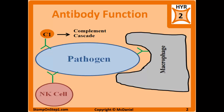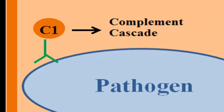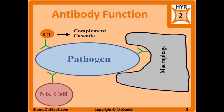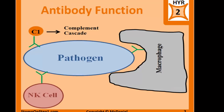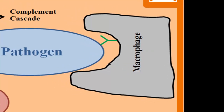You can see here that while one end, called the variable region, is binding to a pathogen, the other end, called the constant region, can interact with the C1 complement protein. Once C1 becomes activated, it sets off the cascade of complement proteins which have multiple ways to attack pathogens and activate other immune processes. Here you can see the antibody acting to opsonize the pathogen — the variable region binds to the pathogen while the constant region binds to the FC receptor on macrophages, increasing phagocytosis and removal of the pathogen.